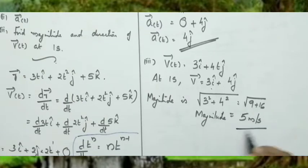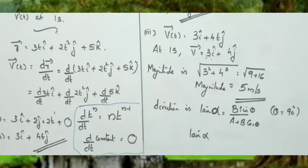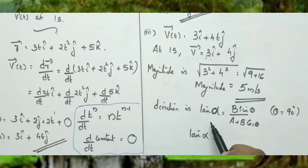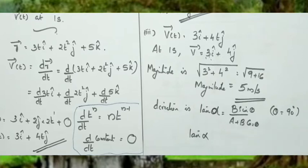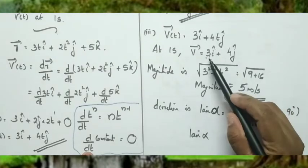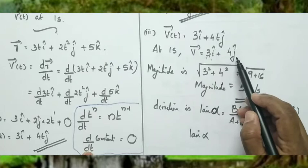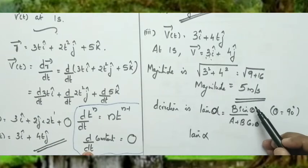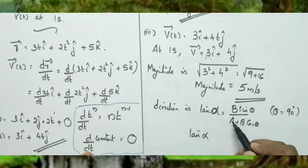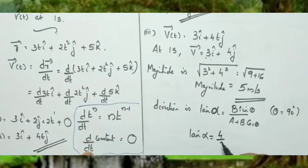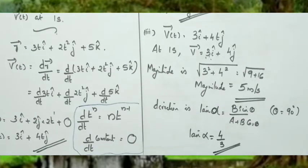For the direction of velocity, using the formula tan α = b sin θ / (a + b cos θ), and since θ = 90° between i and j, this simplifies to tan α = b/a = 4/3. So the direction of the velocity vector is given by tan α = 4/3.